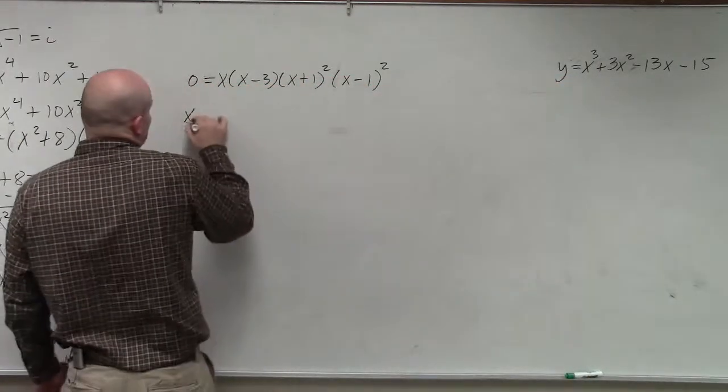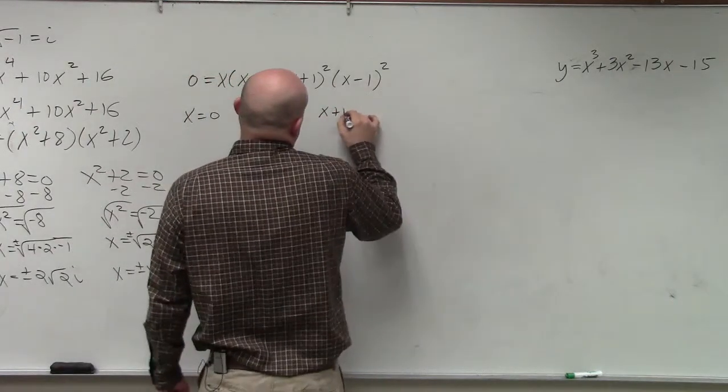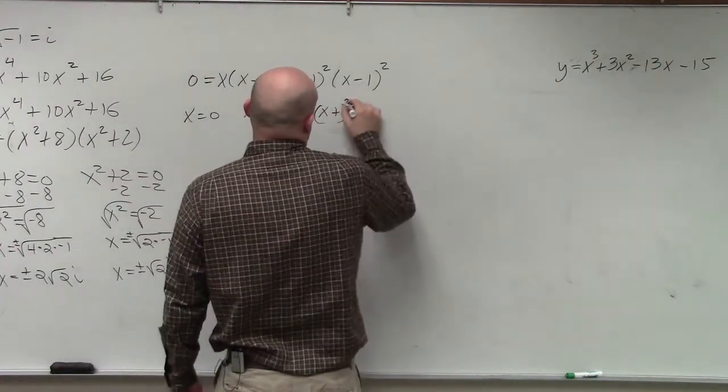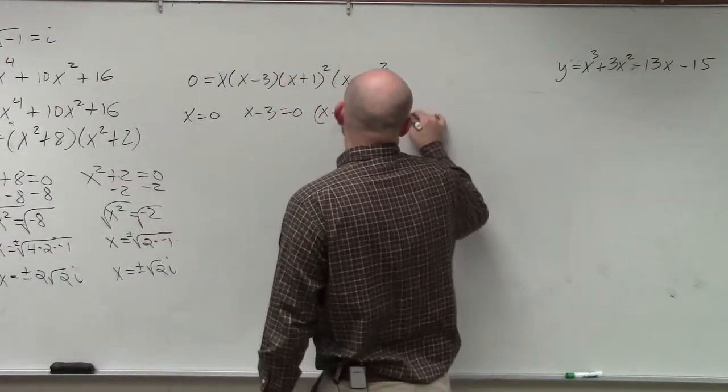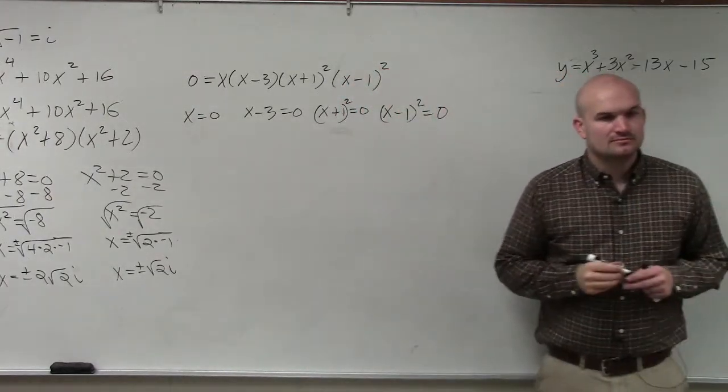So I'll simply say x equals 0, x minus 3 equals 0, x plus 1 squared equals 0, and x minus 1 squared equals 0. OK?